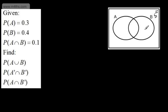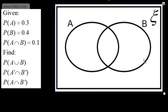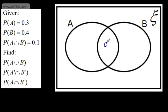We can also use Venn diagrams for probability. Given: the probability of A is 0.3, the probability of B is 0.4, and the probability of A and B is 0.1 — we need to find the probability of A union B, the probability of not A and not B, and the probability of A and not B. Let's grab the Venn diagram. The best place to start is the intersection — A intersection B is 0.1.